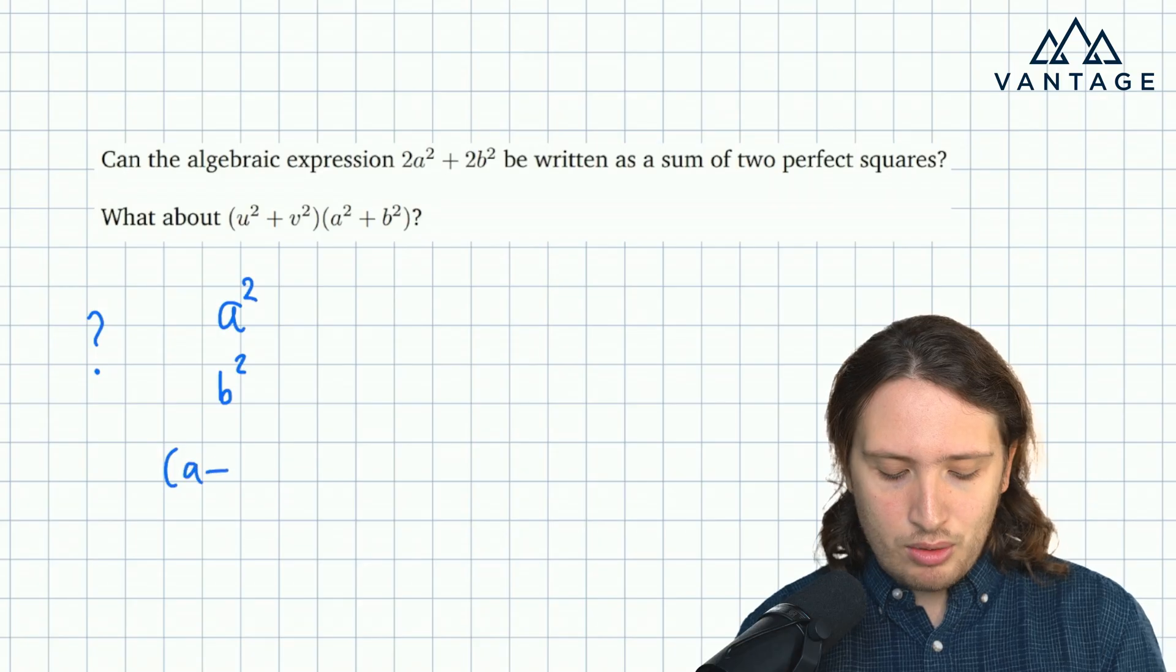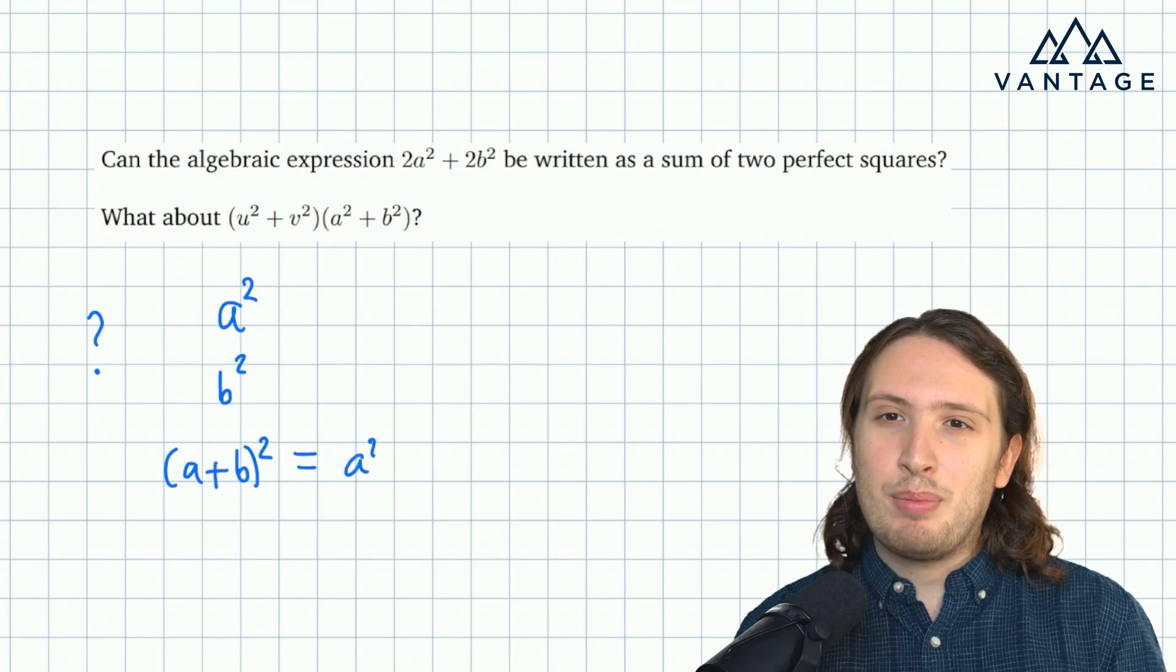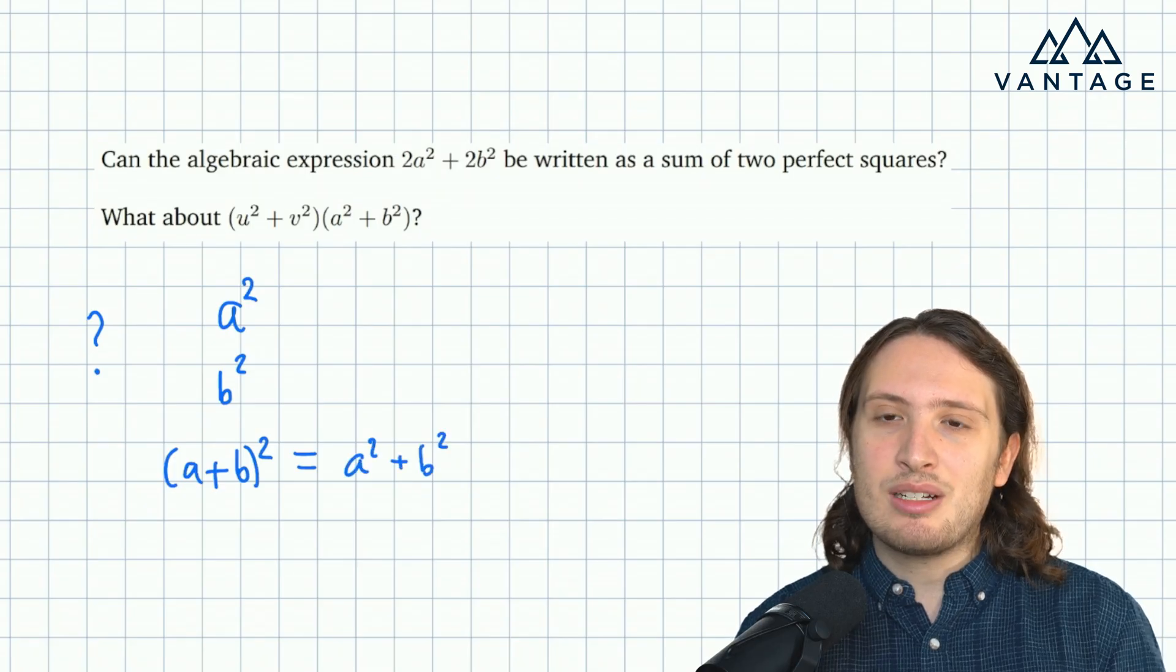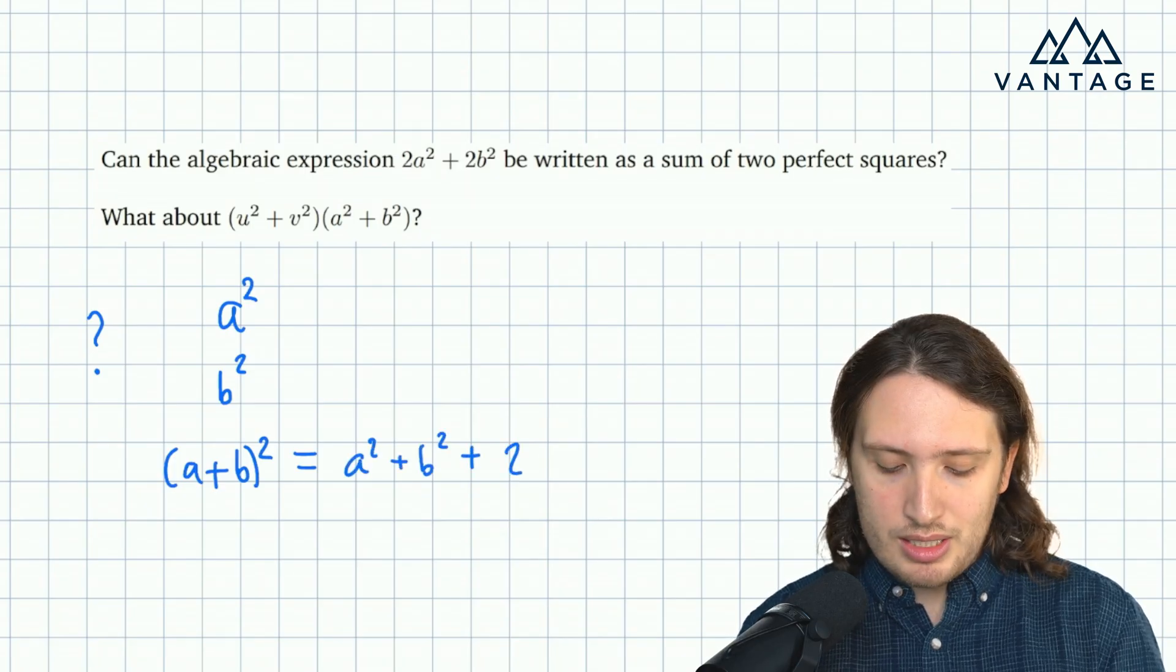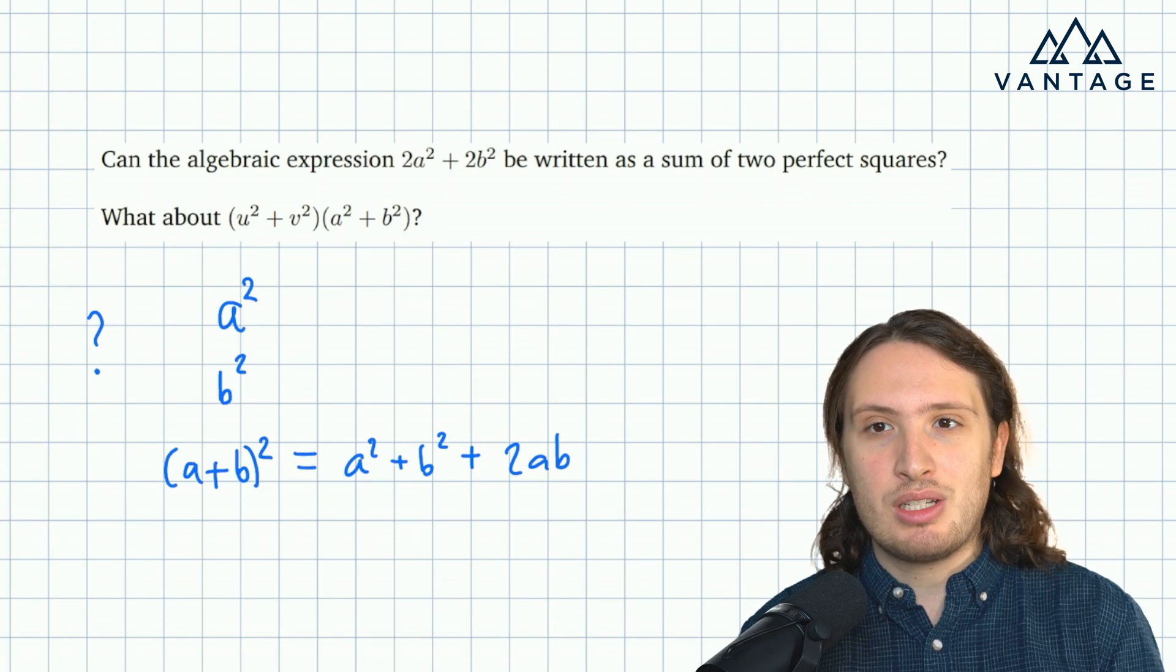Well, what about, for example, (a+b)²? Because in the expansion of (a+b)², yes, I get a² and b², which is really good. I also get a cross term, which I don't want, but maybe there's some way to get rid of the cross term.